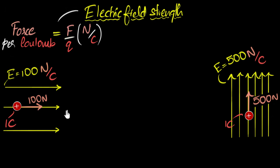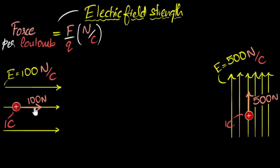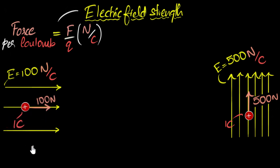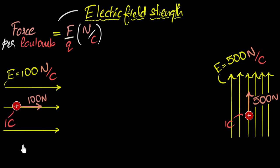Now let's think of this in a different way. Imagine I let go of this charge — I keep my charge over here, I'm holding it, and then I let go. What's gonna happen? It's experiencing a force towards the right, so it'll accelerate towards the right. As it does that, it's gonna gain speed, gain kinetic energy, which means it's gonna lose potential energy. It's just like a ball falling down — as it gains speed, it loses potential energy.